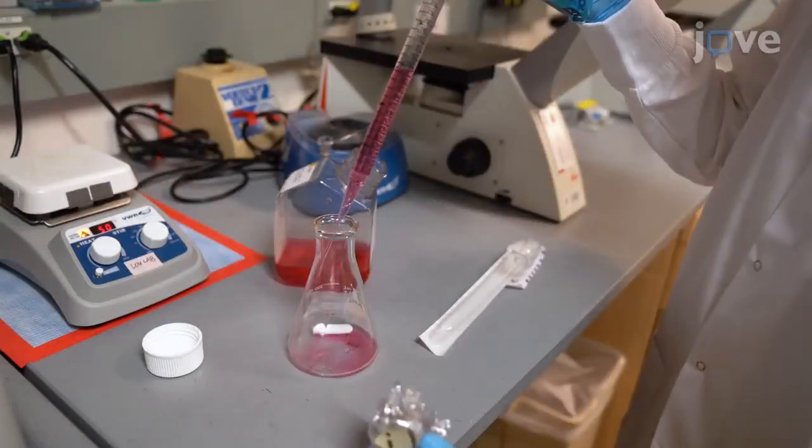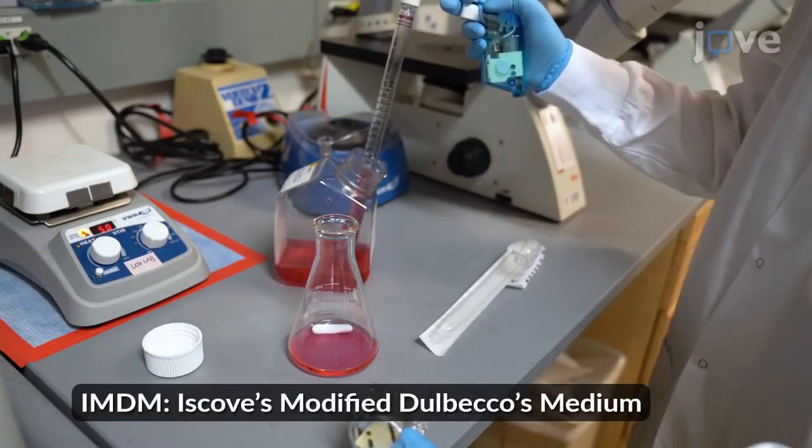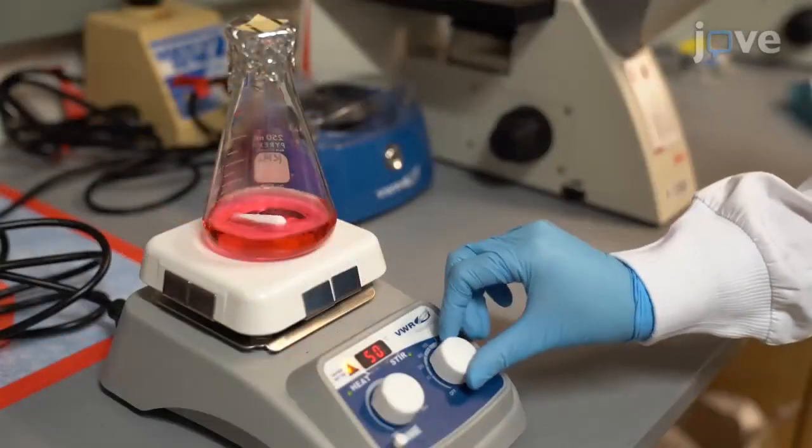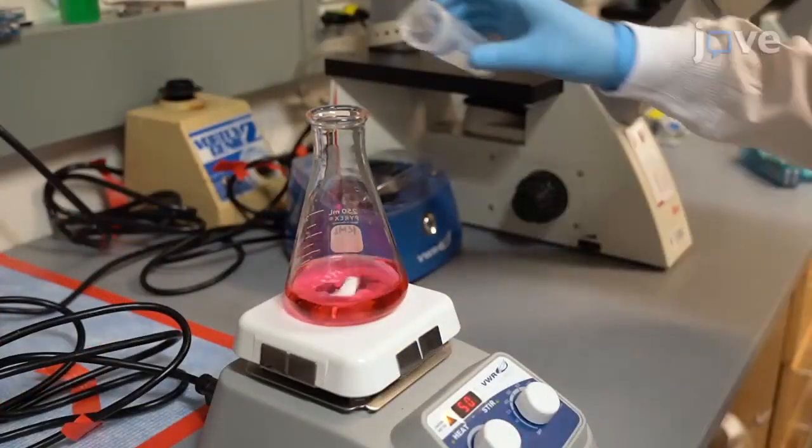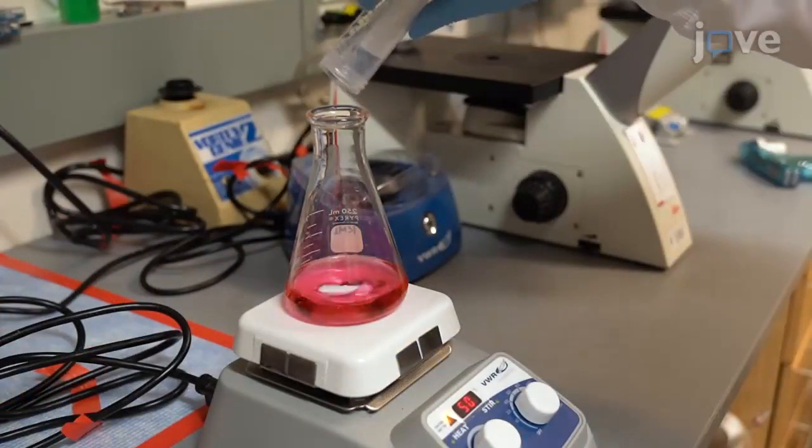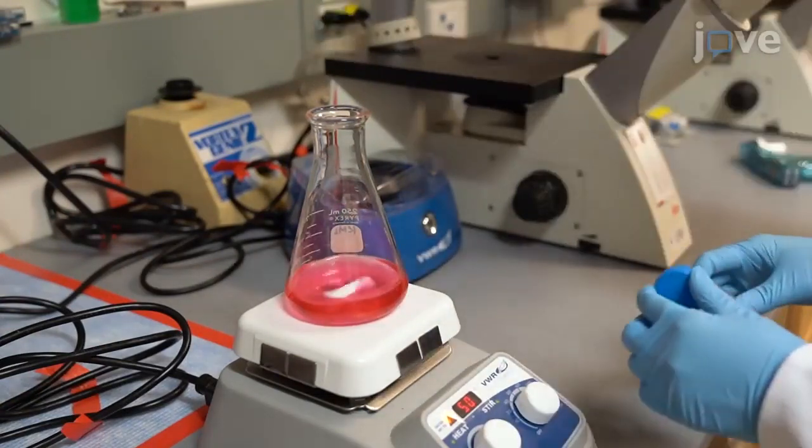To begin this procedure, add 50 mL of IMDM to a conical flask containing a stir bar. Heat the medium to 50 degrees Celsius and add 0.5 grams of PVA while continuously stirring to prepare a PVA stock at a concentration of 10 mg per mL.